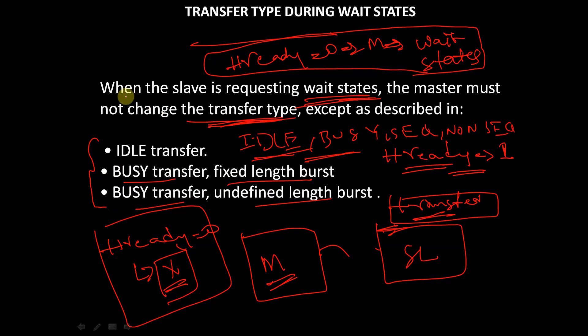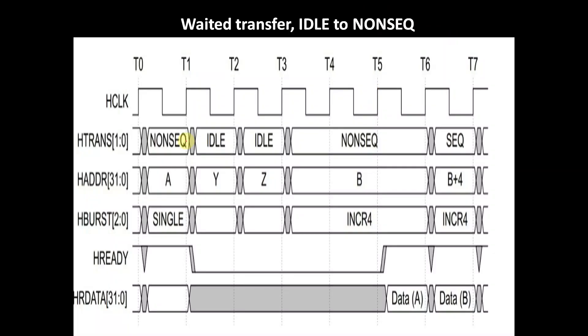So this is the agenda for today's video — when the slave is requesting wait state, the master should not change the transfer type except in those described conditions. This is the transfer type during wait states.